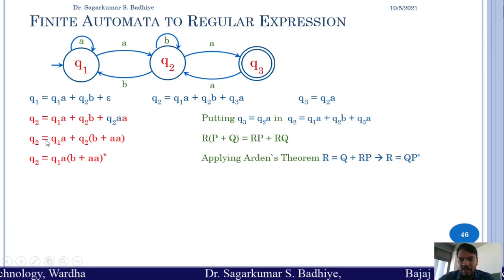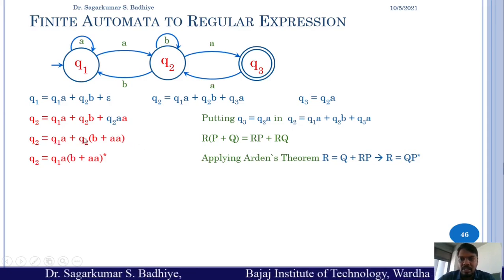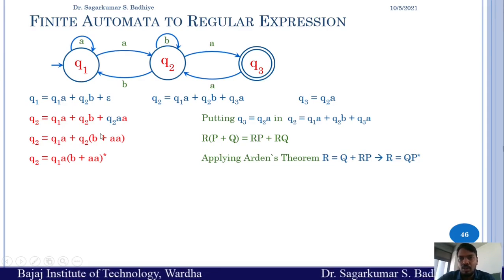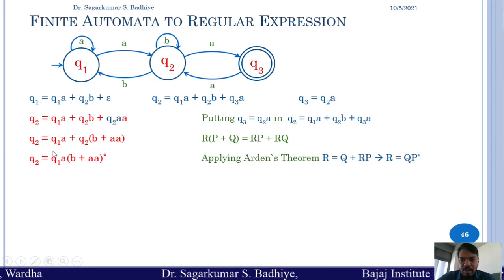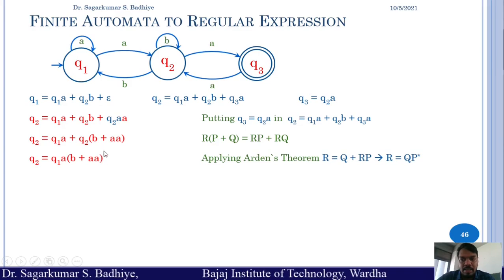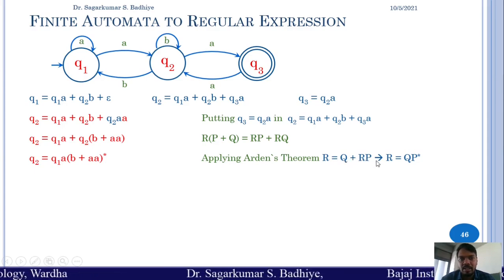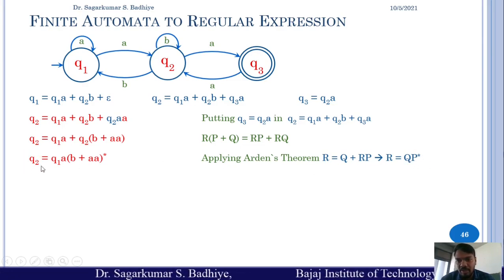According to Arden's theorem, if an equation is of the form r = q + r·p, the unique solution is r = q·p*. Here q is q1·a and p is (b + aa), so the solution is: q2 = q1·a·(b + aa)*. We have now obtained the value of q2, but it is still in terms of q1.